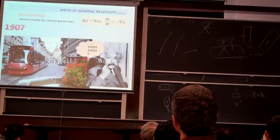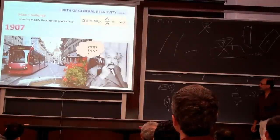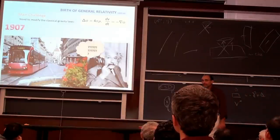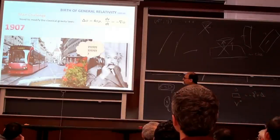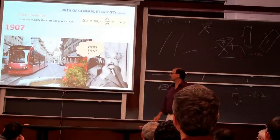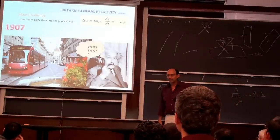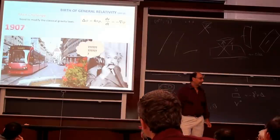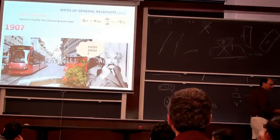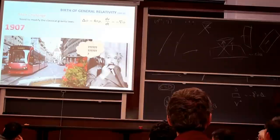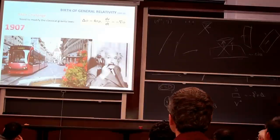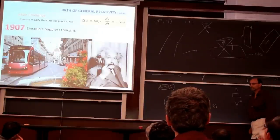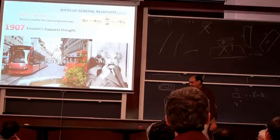At that point, Einstein had what he says was the happiest thought of his life — his great idea. There's the joke about a journalist asking Einstein how he gets his ideas, and Einstein replies: 'I really only had two ideas in my life — I think it was one.'